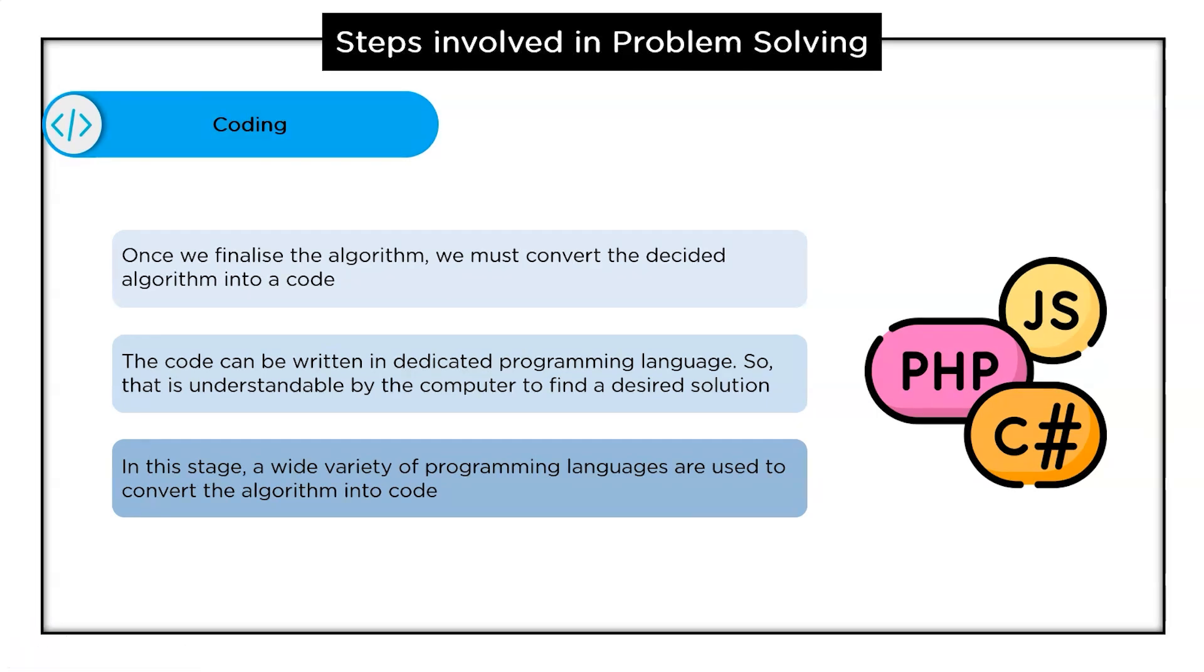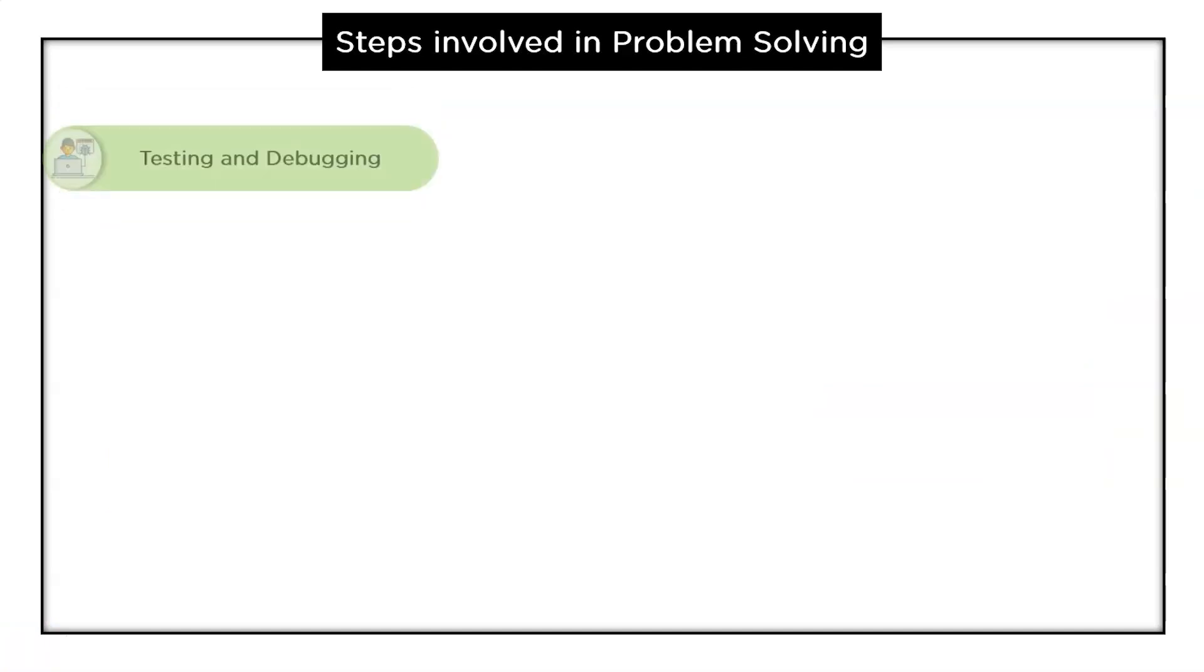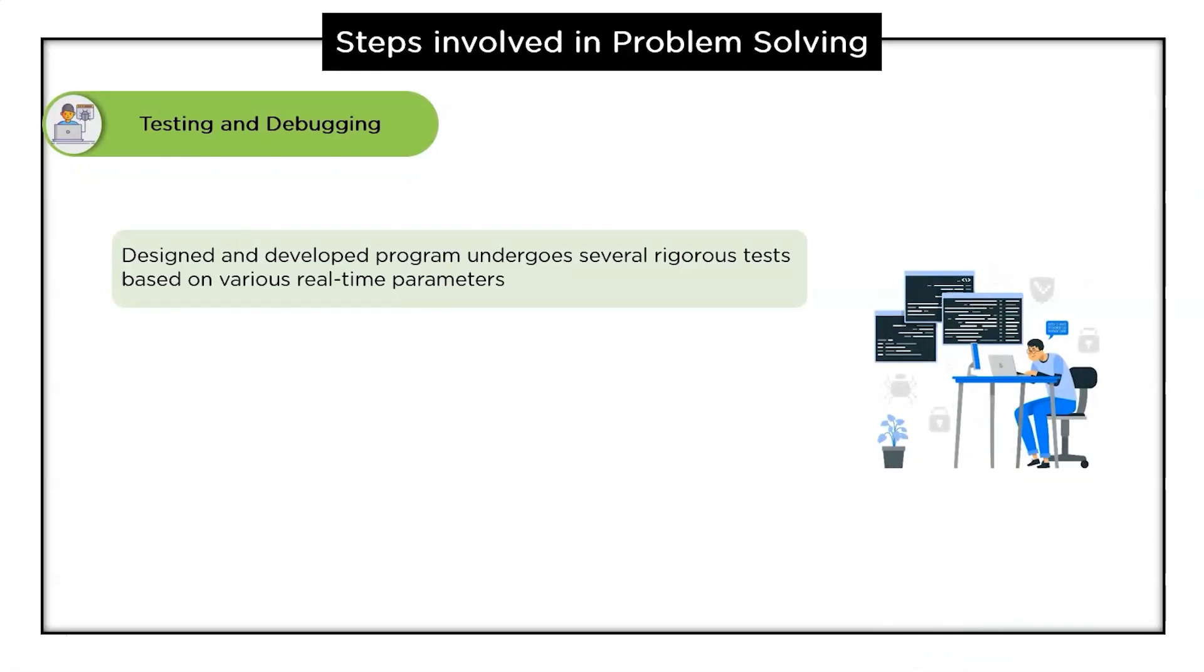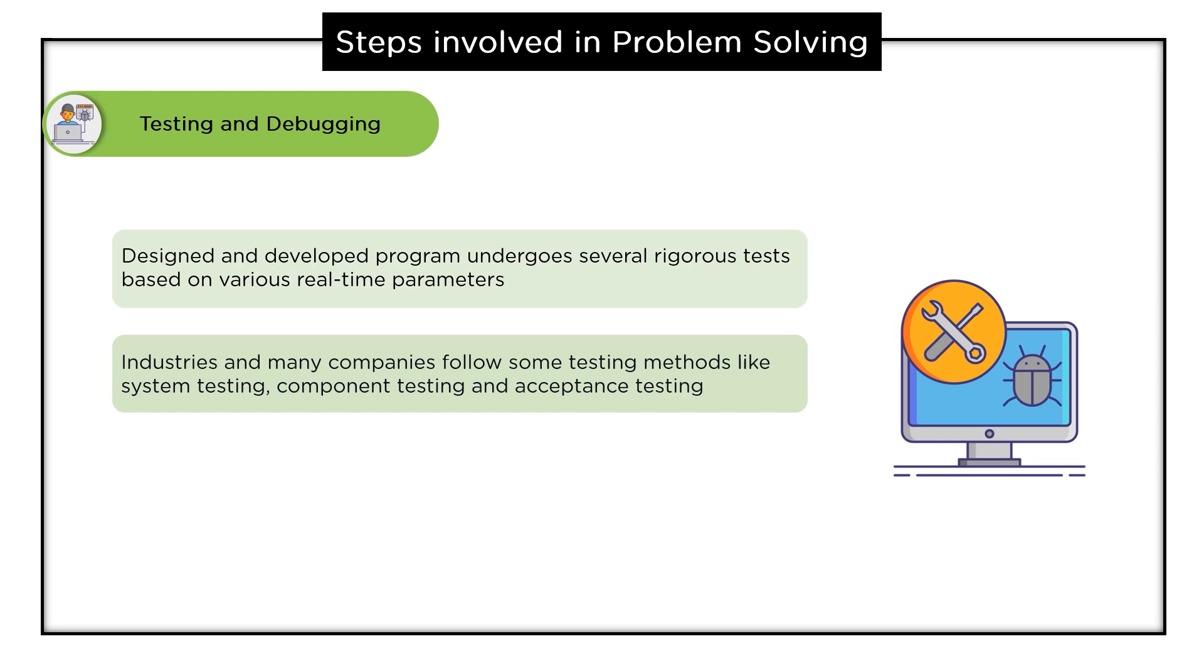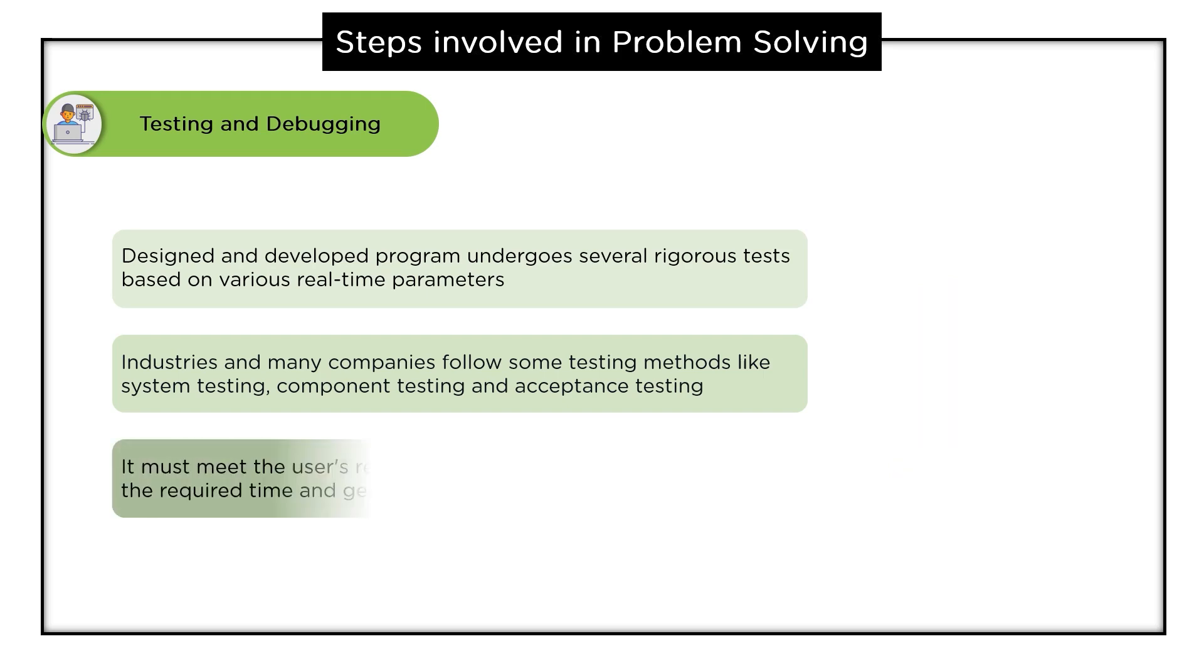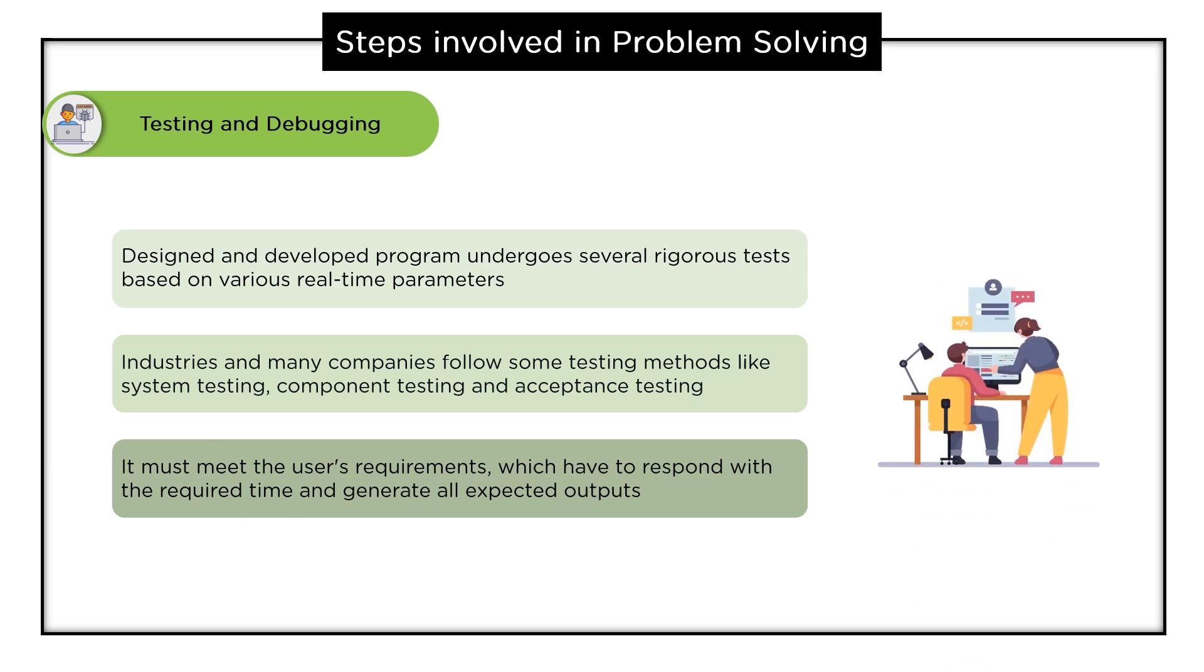Now let's have a look at the final step in the list that is testing and debugging. The designed and developed program undergoes several rigorous tests based on various real life parameters and the program undergoes various levels of simulations. Industries and many companies follow some testing methods like system testing, component testing and acceptance testing. It should generate all expected outputs to all the possible inputs. The program should also undergo bug fixing and all possible exception handling. If it fails to show possible results it should be checked for logical errors.